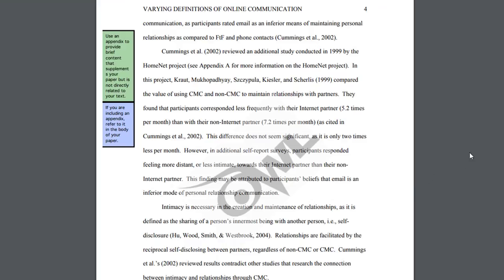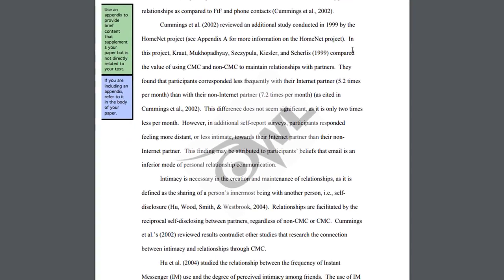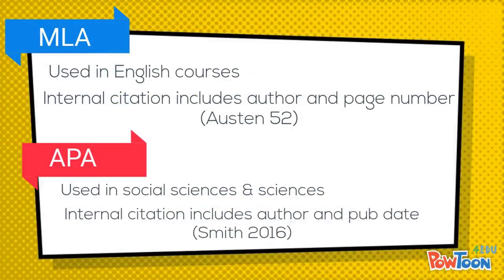In contrast, an APA citation includes the author's last name and the date. APA style is used in social, medical, and physical sciences, where shorter articles are usually referred to as opposed to long novels. For these fields, the date of research is more important so you can see how current the information is. Your different teachers and professors are not just trying to torture you by requiring different styles — they simply choose the style that makes the most sense for their subject.